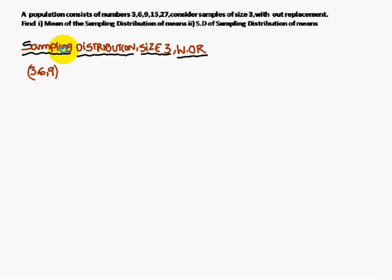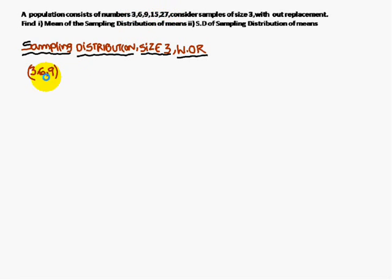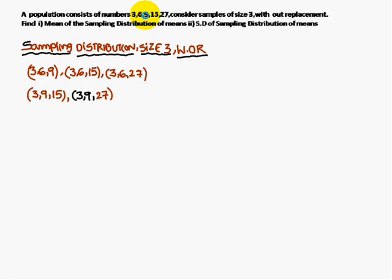Size 3 means each sample has three numbers. The first combination is 3, 6, 9. Next is 3, 6, 15. Then 3, 6, 27. After those, the next combination starting with 3, 6 is done, so we move to 3, 9 combinations.